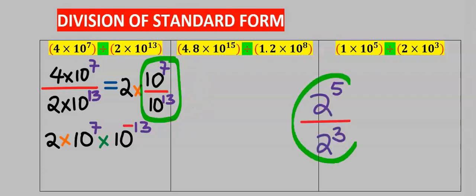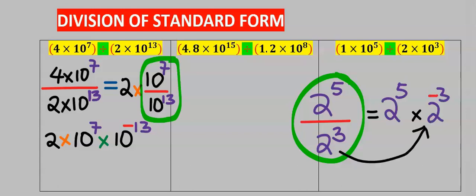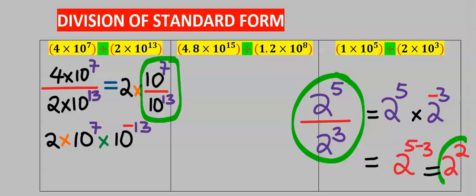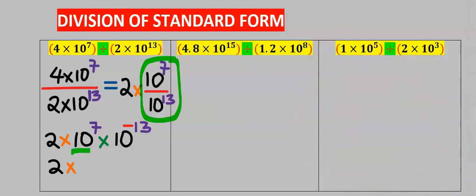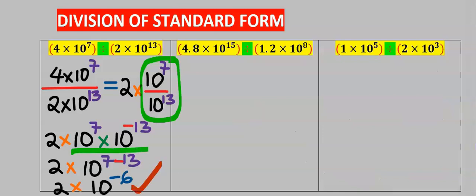For example, 2 to the power of 5 divided by 2 to the power of 3 — the 2 to the power of 3 goes up and acquires a negative, giving 2 to the power of 2, which is 4. Applying this law to our problem, the answer is 2 times 10 to the power of minus 6.